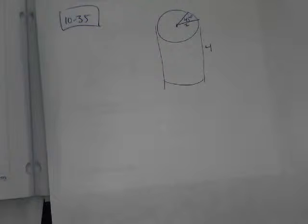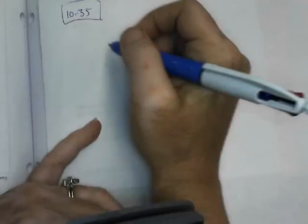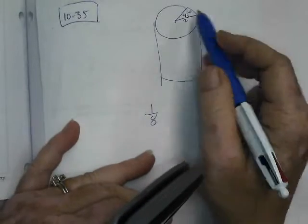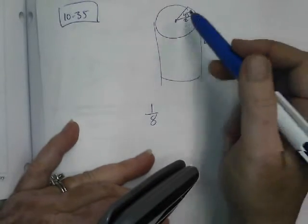It's one eighth, because eight times 45 is 360. Is that true? Yes. Okay, so this is one eighth. Does anyone remember how to get the volume of a cylinder?